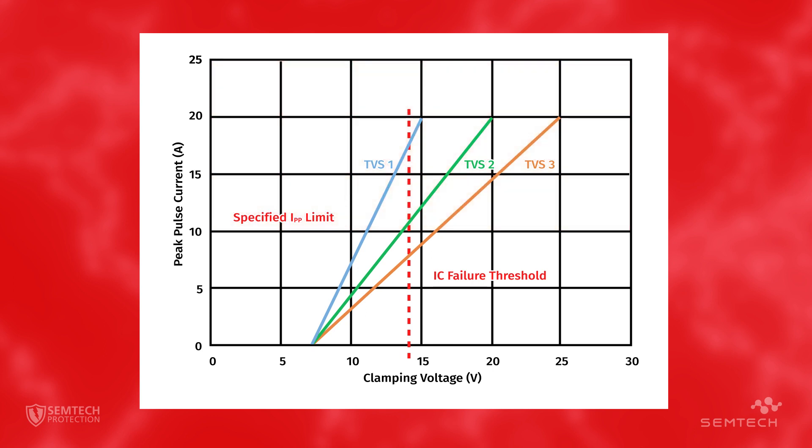Each TVS device has the same breakdown voltage of approximately 7 volts and are rated for a maximum peak pulse current of 20 amps.